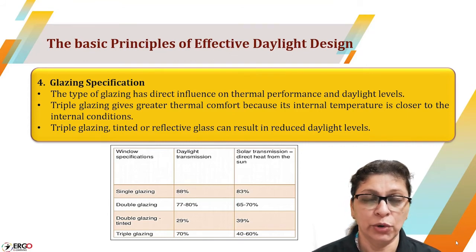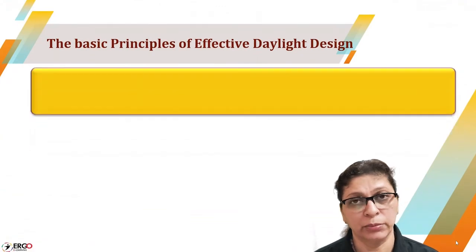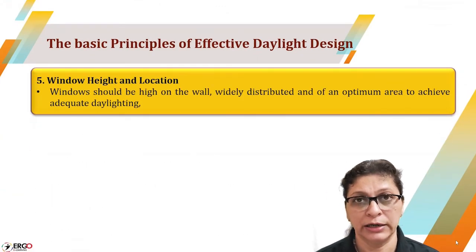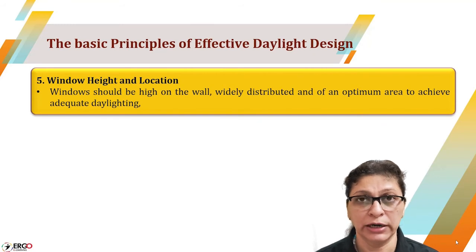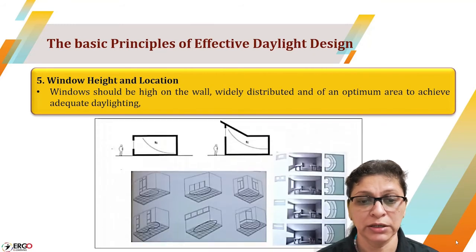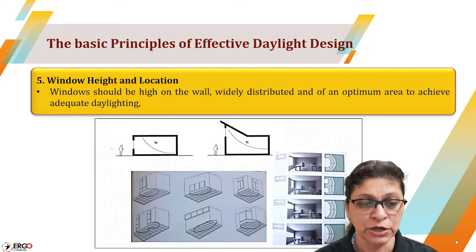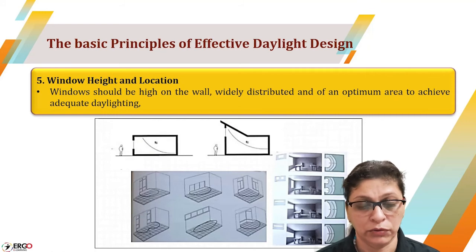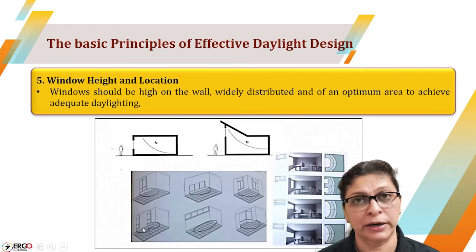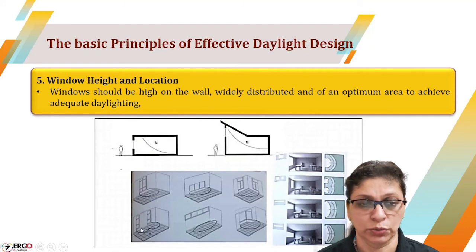Window height and location also play a very important role in daylight entering the building. Ideally, windows should be located at the highest possible level so that light gets evenly distributed and reaches all parts of the building. Some examples are shown here — a vertical wall, horizontal wall, corner wall, and corner window — along with their effects and thermal penetration.